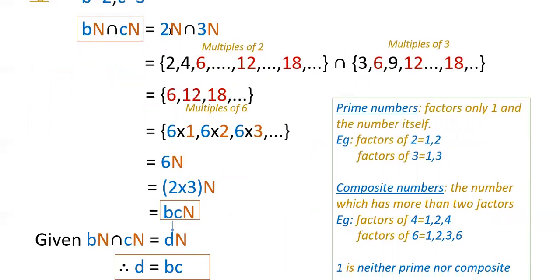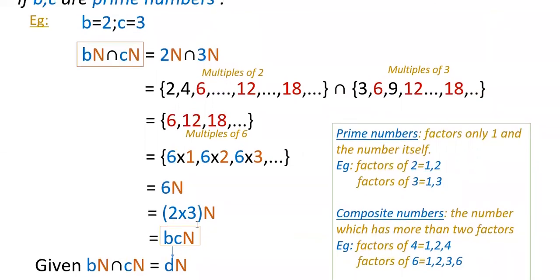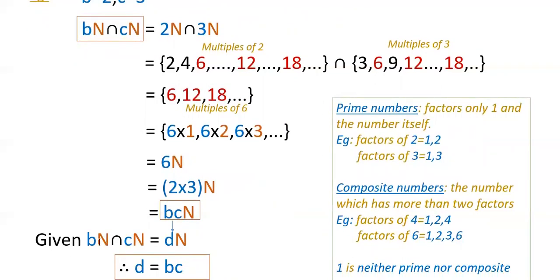Now 6 can be written as 2×3, which is B×C. So 2N ∩ 3N gives multiples of 2×3, that is multiples of 6N, which equals BCN. Since Bn ∩ Cn = Dn is given, here D = BC. So if B and C are prime numbers, then D = BC. This is the first case.